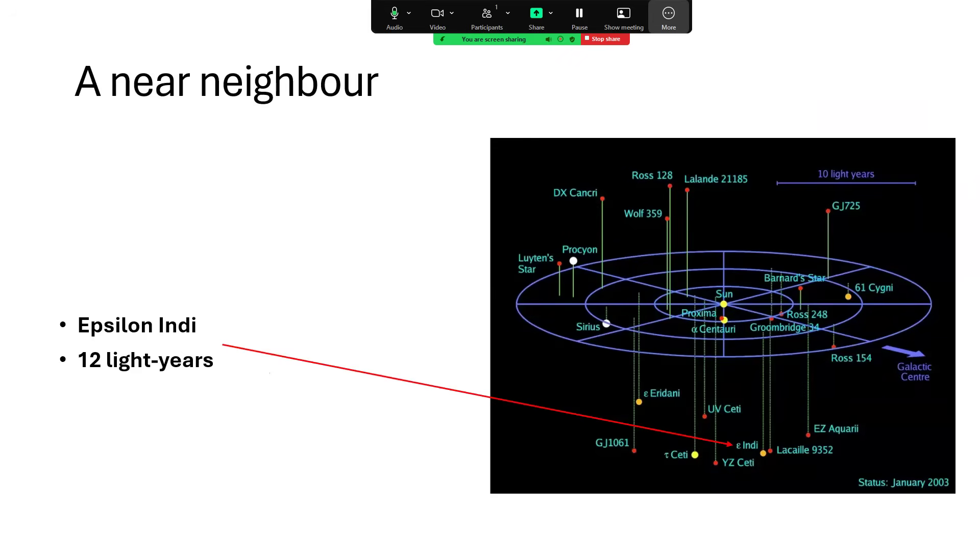We have this pseudo 3D plot of the region of stars around the sun. The sun in the center, Alpha and Proxima Centauri very close by, Barnard's star, some of the others that we might talk about in other talks. And Epsilon Indi down there at the bottom, an orange dot.